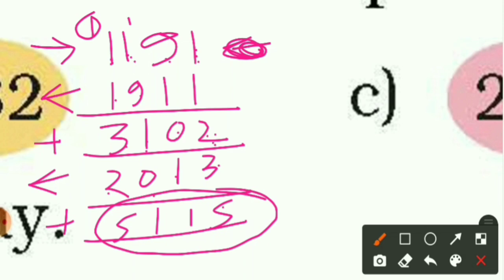Take 3102 reversed as 2013 and add: 3 plus 2 is 5, 1 plus 0 is 1, 0 plus 1 is 1, 3 plus 2 is 5 — giving 5115. Is 5115 a palindrome? Yes! Forward it reads 5-1-1-5, and backward it also reads 5-1-1-5. We used several more steps to get this special number, but we got it.